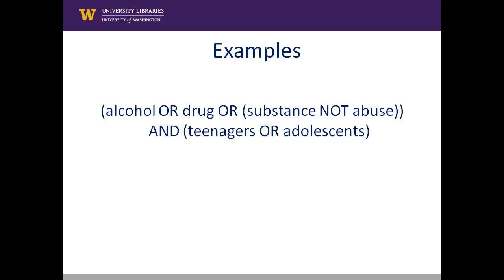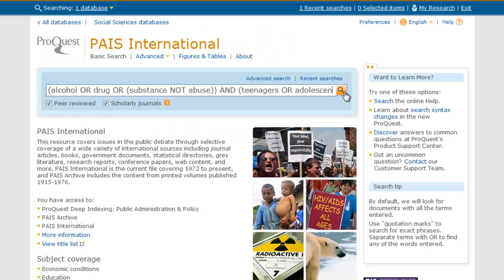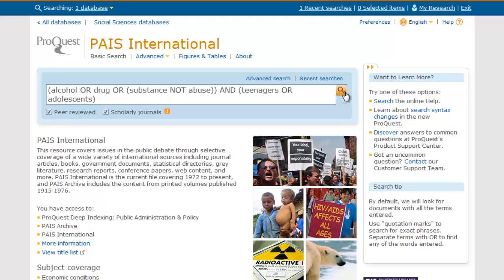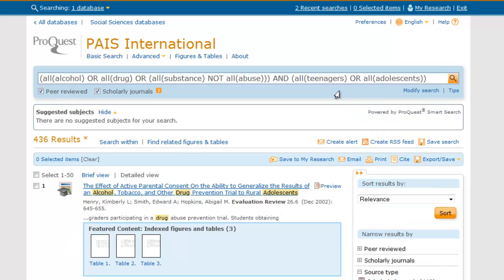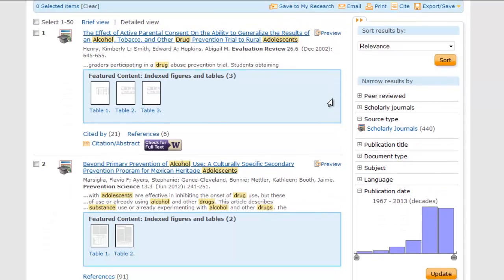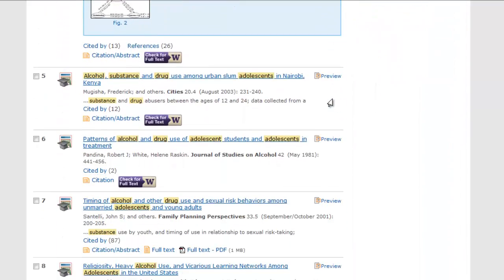Let's look at a few other examples. This second example is a little more complex, but let's break it down. The first set of parentheses has alcohol OR drug OR substance, but NOT abuse. This will search for alcohol OR drug OR substance, but it will not search for substance abuse. The second set of parentheses is teenagers OR adolescents. These two sets of parentheses are combined with the operator AND, so it will search for the concept that each set of parentheses lays out.